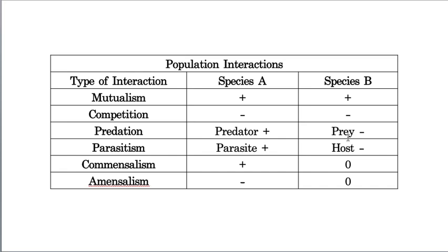To summarize population interactions: in mutualism, both species A and B are benefited. In competition, both organisms get harmed. In predation, the predator is benefited and the prey is harmed or killed. In parasitism, only the parasite is benefited and the host is harmed. In commensalism, one is benefited and the other is neutral. In amensalism, one is harmed and the other is neutral. This table shows what type of benefits species A and species B receive in each interaction.